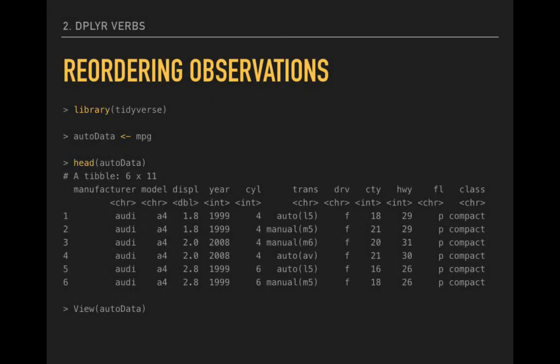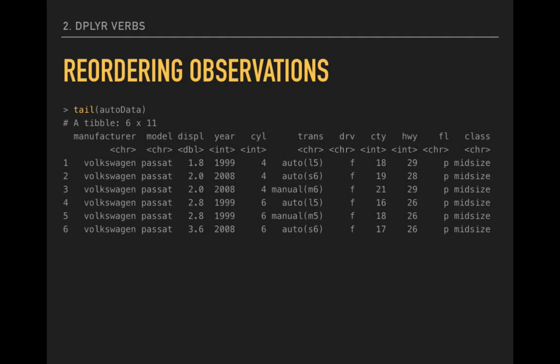The practical implication of this is that we are changing the underlying order of our data. Here I've loaded the MPG data into a data frame named AutoData. I can use the head function to look at the first six observations. We see that the data appear to be sorted based on the manufacturer. All the initial cars are Audi vehicles. A deeper exploration using the view command with a capital V confirms this.